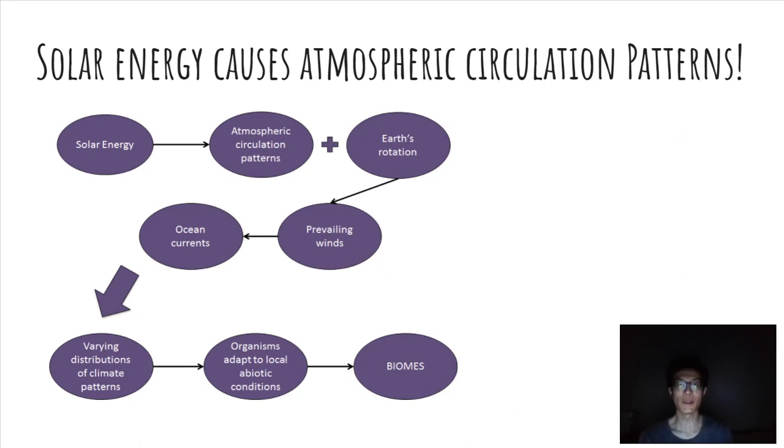This flow chart is very important for our understanding of ecology in a general broad realm. What's really fascinating is that it all starts at the sun. The solar energy triggers atmospheric circulation patterns. In addition, the earth is rotating, so the atmospheric circulation patterns plus earth's rotation is what's actually going to cause and make the prevailing winds.